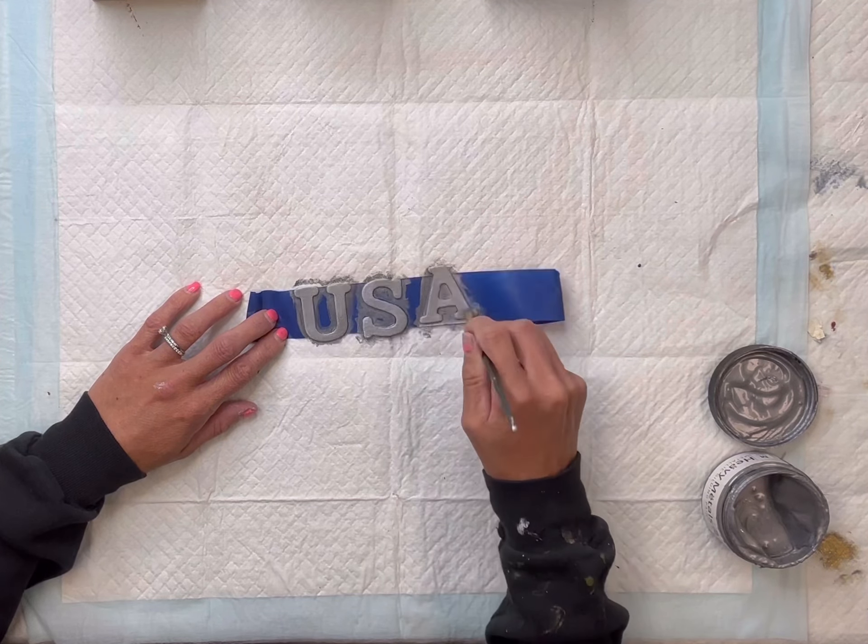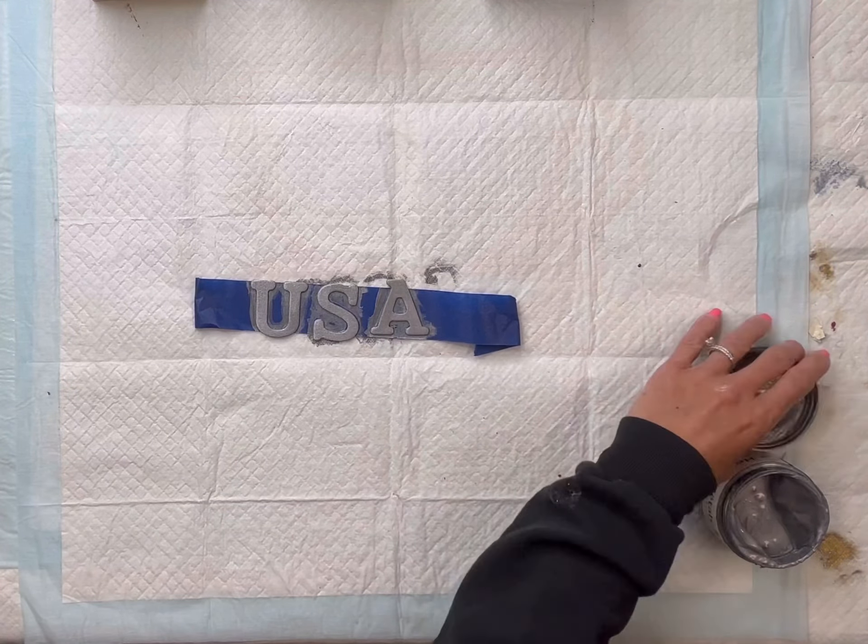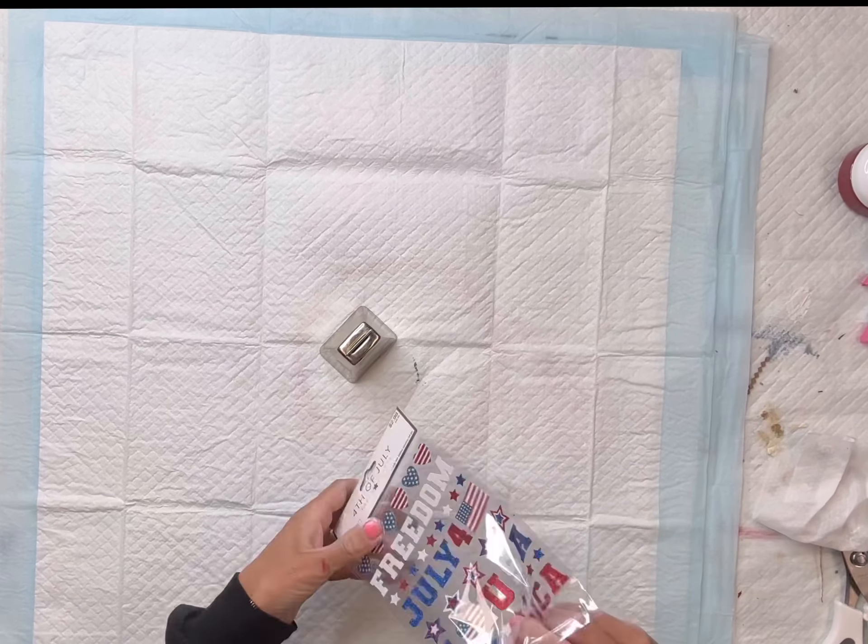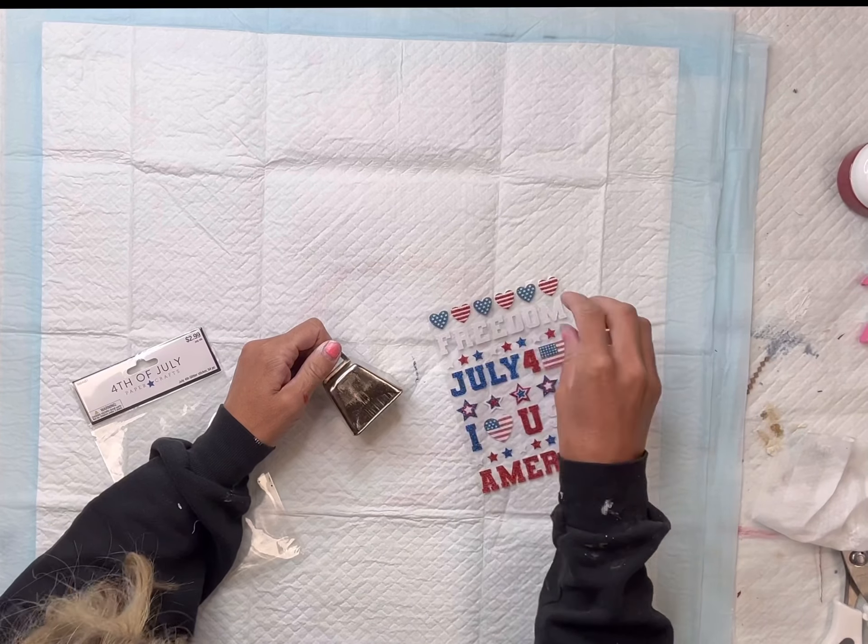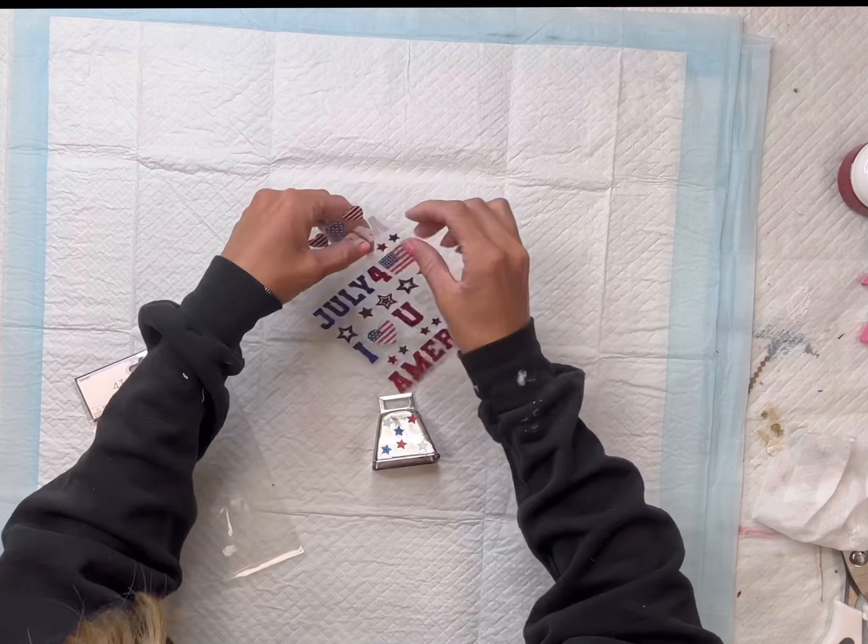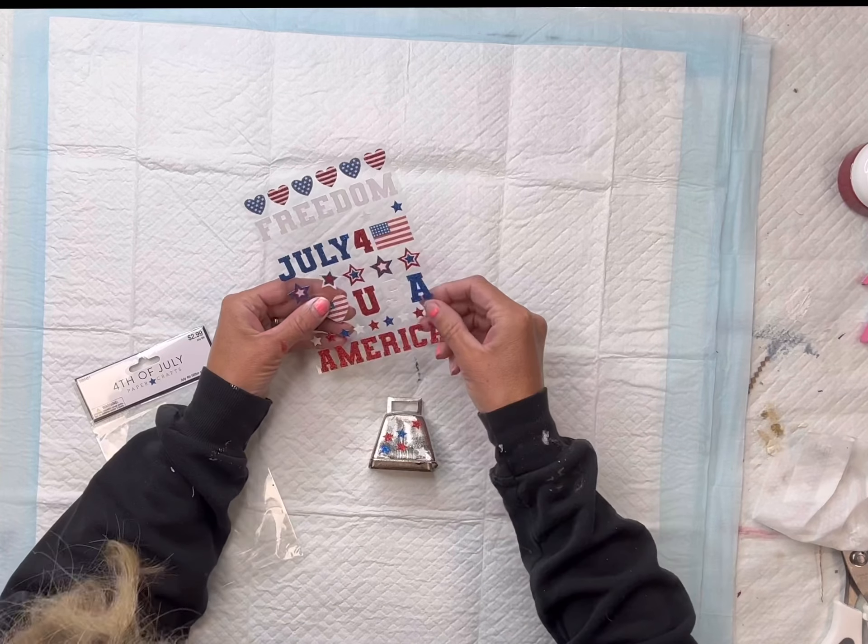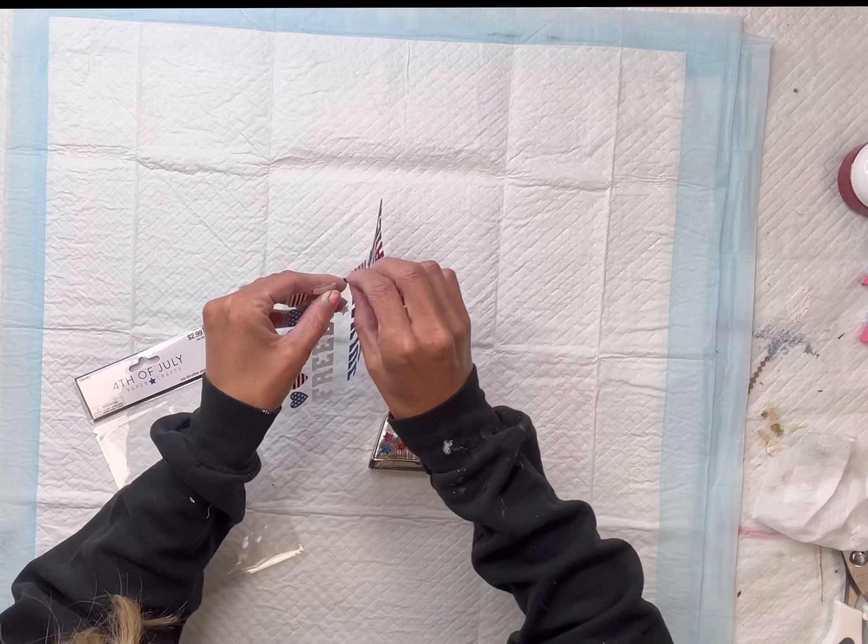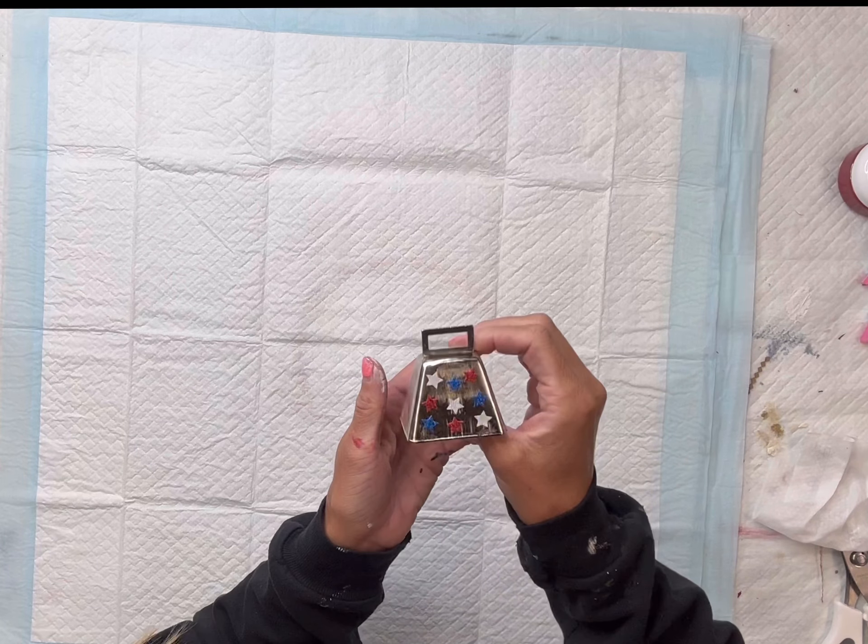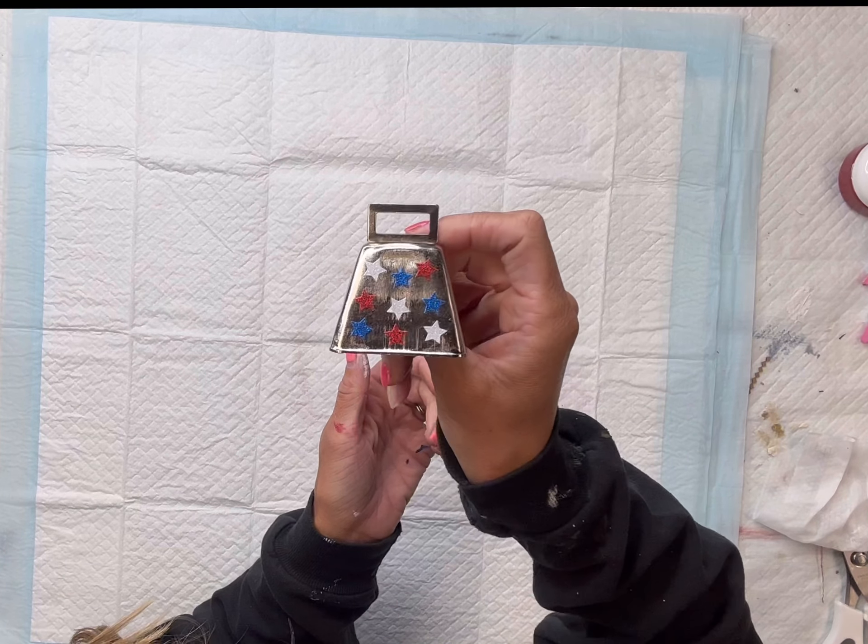And then I will just set my letters aside to dry. I found this little cowbell at Hobby Lobby. They had a variety of different sizes. And I have these little stickers. And I'm going to place the different star stickers on the cowbell. Now, I did try to stencil the stars on, and because it's such a small space, I felt like the stickers came out better.